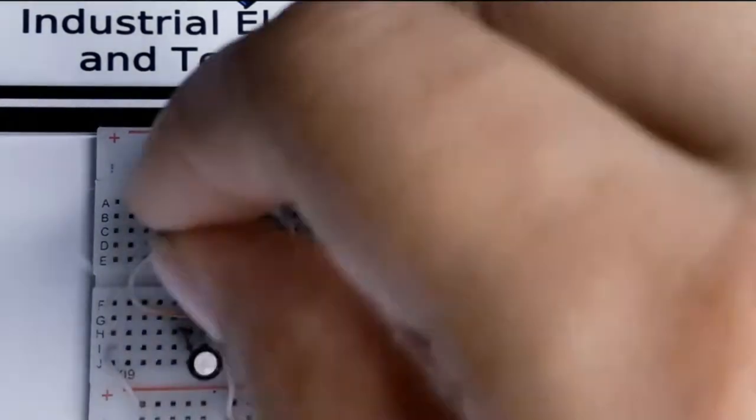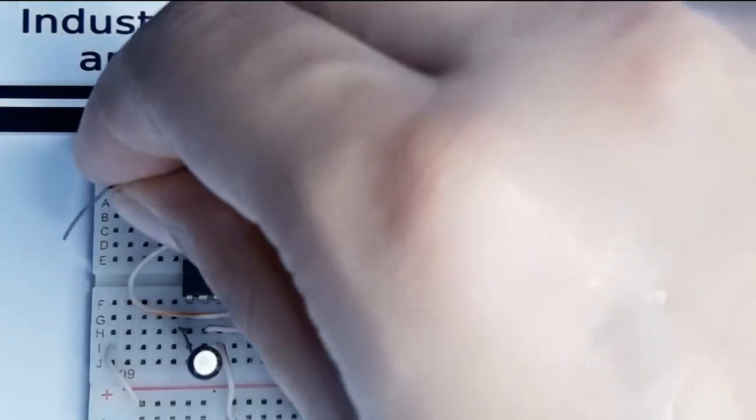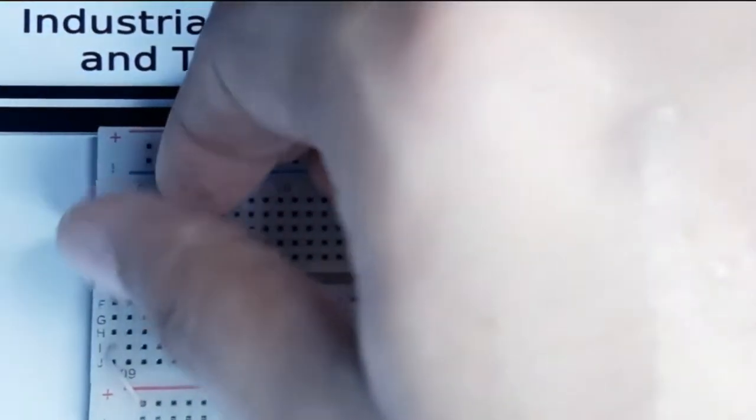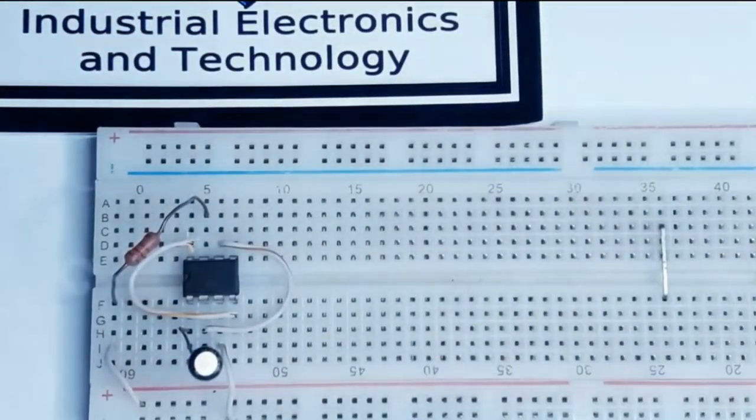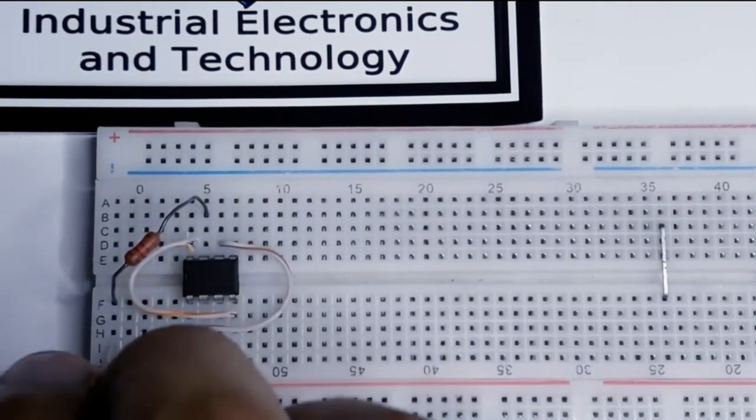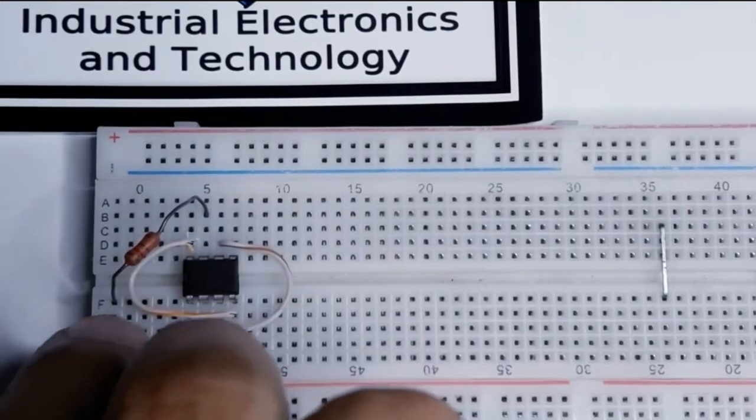One 120 ohm resistor will go to pin number eight and over here. The other 120 ohm resistor will go from pin number one and same at pin number eight with the other resistor.